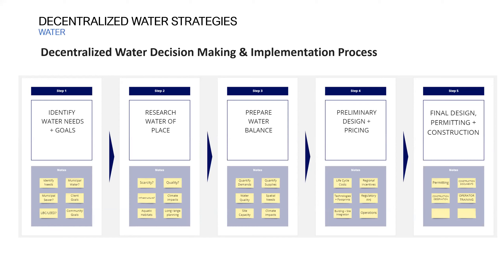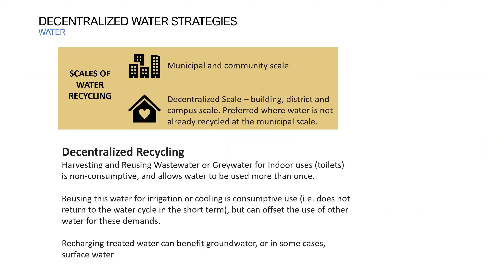The final stage involves construction documentation, permitting, ensuring everything is built properly, and training operators. This five-step arc is important because steps one and two — understanding goals and the water of place — are frequently skipped, and that omission can undermine the success of the project.